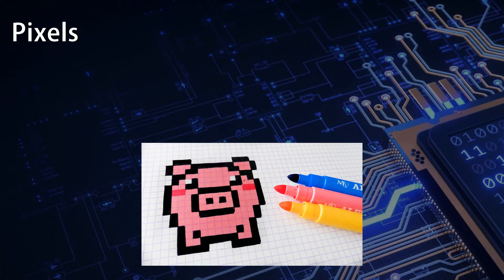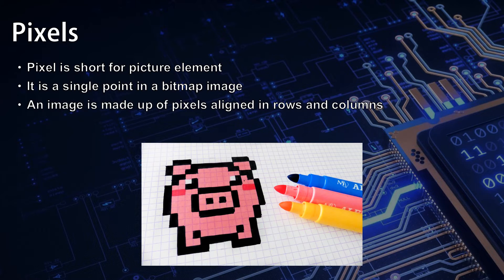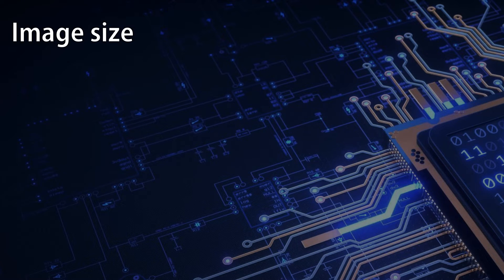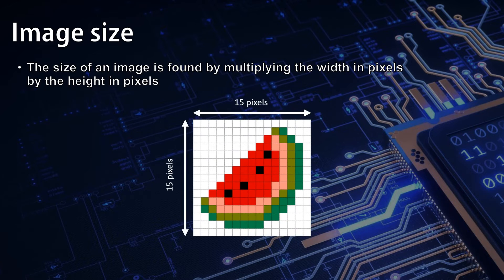Bitmaps are made up of pixels. Pixel is short for the two words 'picture element.' It is a single point in a bitmap image. An image is made up of pixels aligned in rows and columns, and each pixel is assigned a colour. The size of an image is found by multiplying the width in pixels by the height in pixels. This example image is 15 pixels wide by 15 pixels tall, meaning it has 225 pixels in total. Information about what colour it is would need to be stored for each one of these pixels.